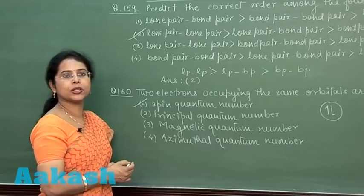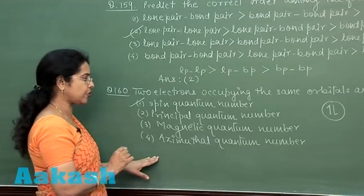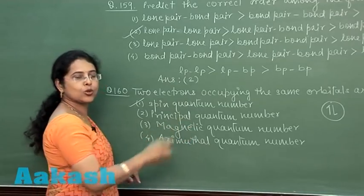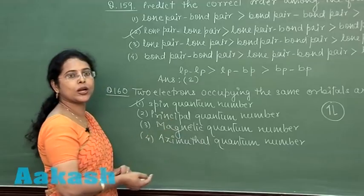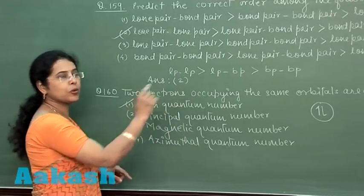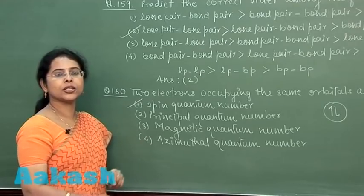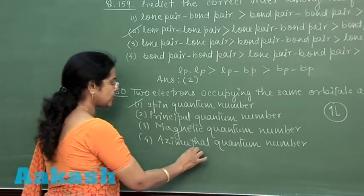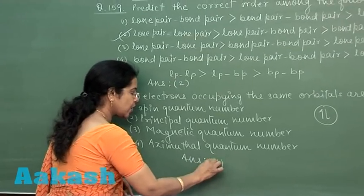If electrons are in the same orbital, their principal quantum number, magnetic quantum number, and azimuthal quantum number are all the same. However, the spin quantum number differs: one electron has +1/2 and the other has −1/2. So the answer is option one — spin quantum number.